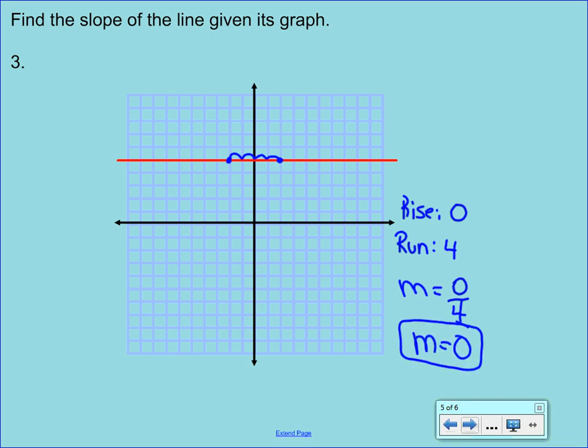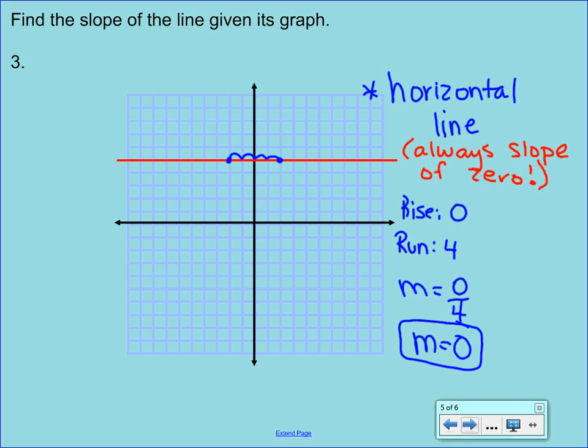Now, I want you to write this down. This is a horizontal line. Anytime you have a horizontal line, you will never have a rise other than zero. So, any horizontal line will always have a slope of zero. So, from here on out, you really don't have to show any work. If you see a horizontal line, you would just know that the slope would be zero. If you think about the fraction, the zero on top is what made this. The slope would be zero.